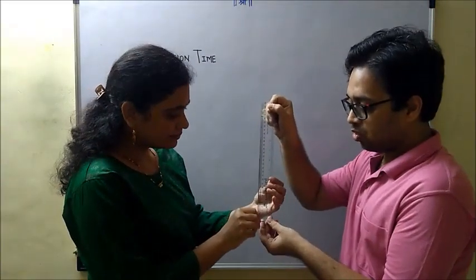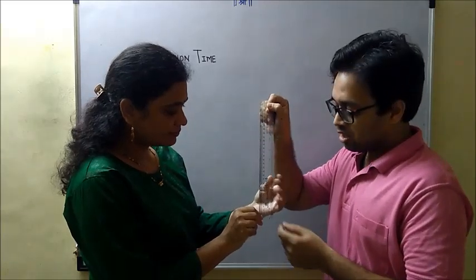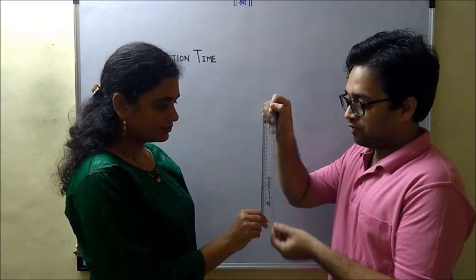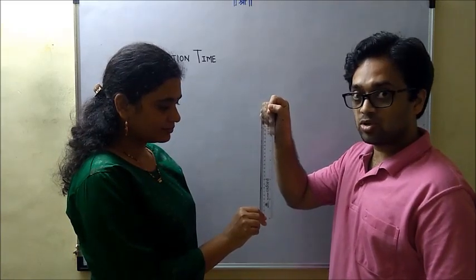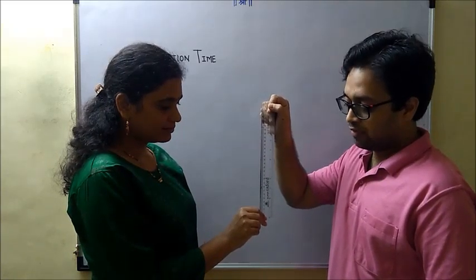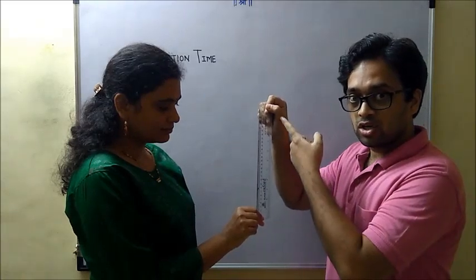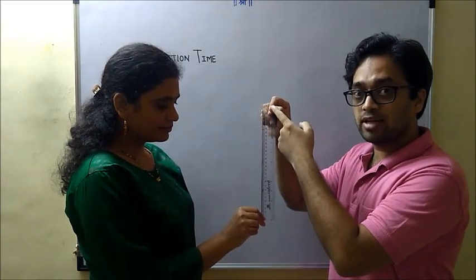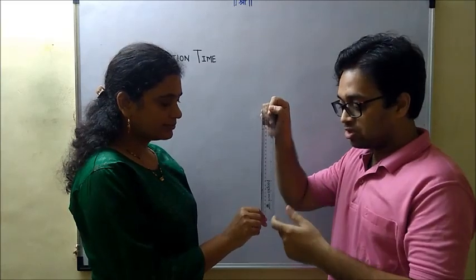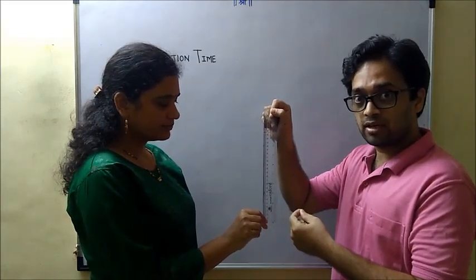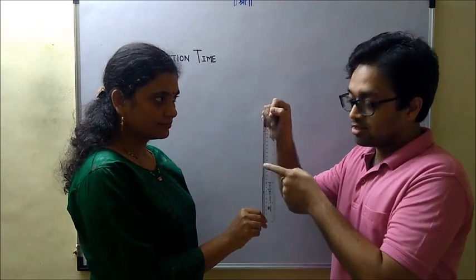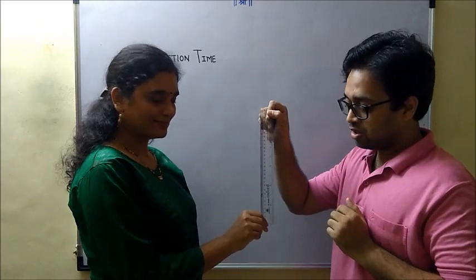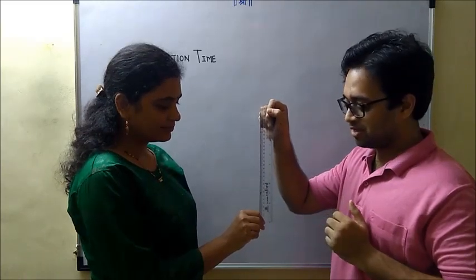But she will just be holding her fingers near the scale but will not be holding the scale actually. Whereas I am holding the scale. She has positioned it on the zero mark. When I release the scale, her eyes will notice that I have released the scale. So that is the event that has happened and she will try to catch hold of the scale. The distance that the scale travels in between that will help us to give the reaction time. So let us do this experiment now.